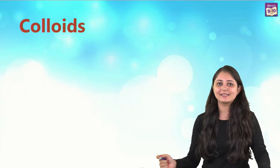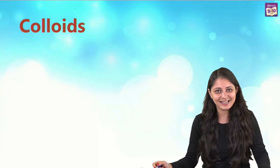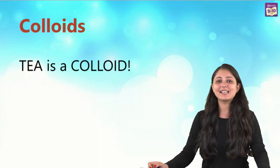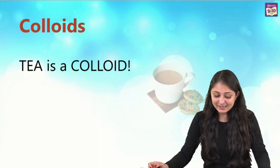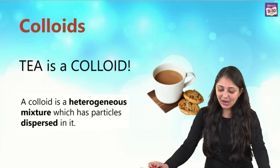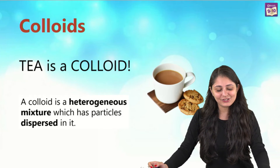Even though tea looks like a homogeneous mixture, when we zoom in we realize the particles are relatively larger and not evenly distributed. And just like colloids, it is actually scattering light. So tea is actually a colloid — it's a heterogeneous mixture.